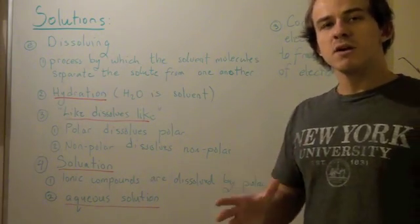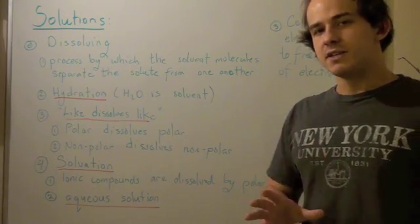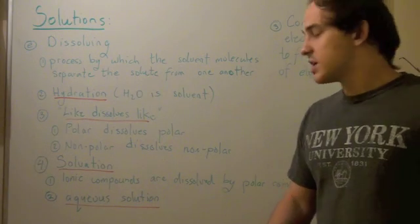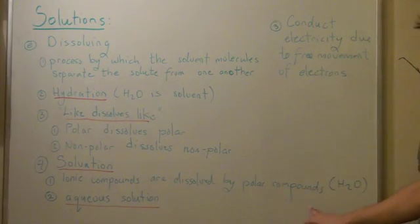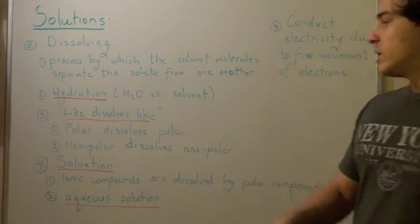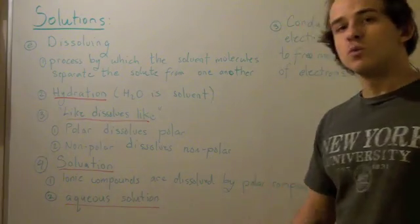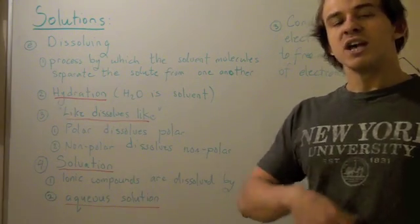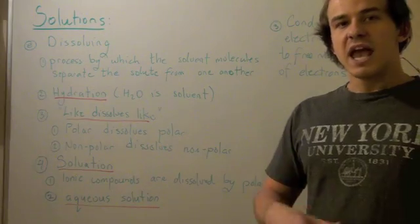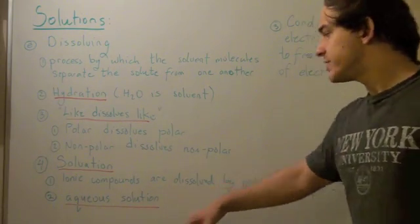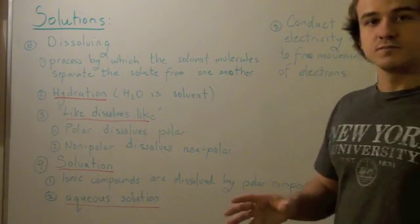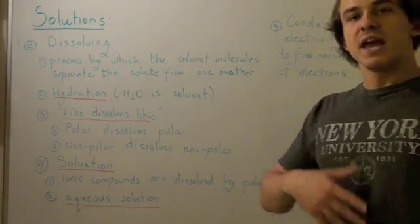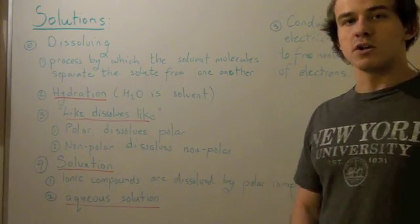These dipole moments come from large differences in electronegativity. Solvation is the process of breaking down ionic compounds by polar compounds such as H₂O. The result are aqueous solutions. Within an aqueous solution, the ions are able to move freely, so the electrons are also able to move freely, and because of this, aqueous solutions conduct electricity very well. So water will not be able to conduct electricity as well as a solution of sodium chloride and water.